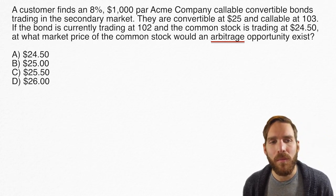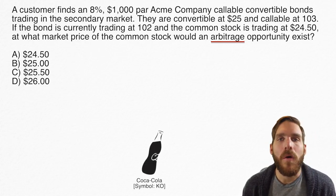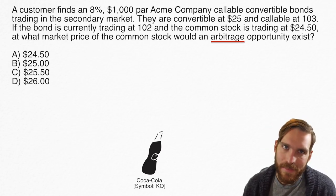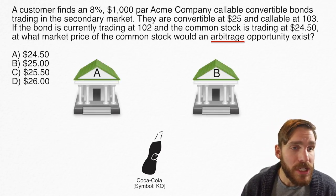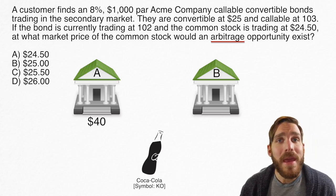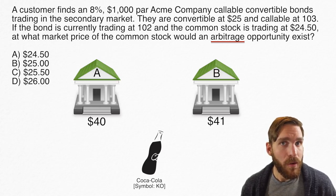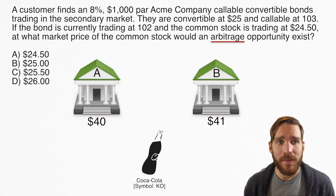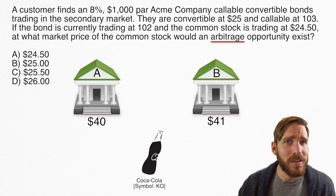Let's imagine we're talking about Coca-Cola stock, traded on two separate exchanges — Exchange A and Exchange B. Exchange A is trading Coca-Cola stock for $40 a share, and Exchange B is trading it for $41 a share. We can both see that there's a price inefficiency — something is wrong. One market thinks it's cheaper than the other; the other thinks it's more expensive.